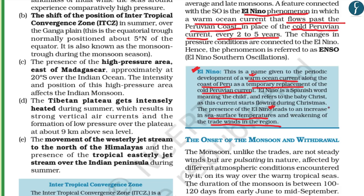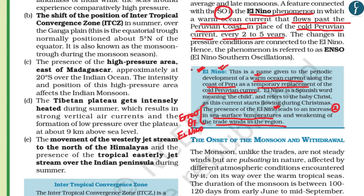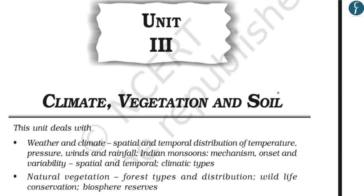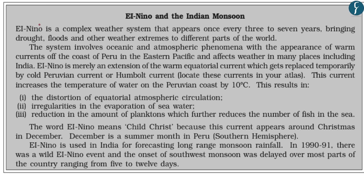From the Class 11th NCERT Geography book, 'India's Physical Environment', Chapter 4: El Niño is described as a complex weather system that appears once every 3 to 7 years, bringing droughts, floods, and other weather extremes to different parts of the world.